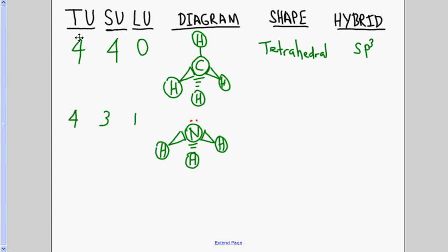This shape would be trigonal pyramidal. The hybridization would still be sp3. There could be yet another shape if there were four total electron pair units but only two of them were bonded to other atoms, leaving two unshared electron pair units around the central atom.